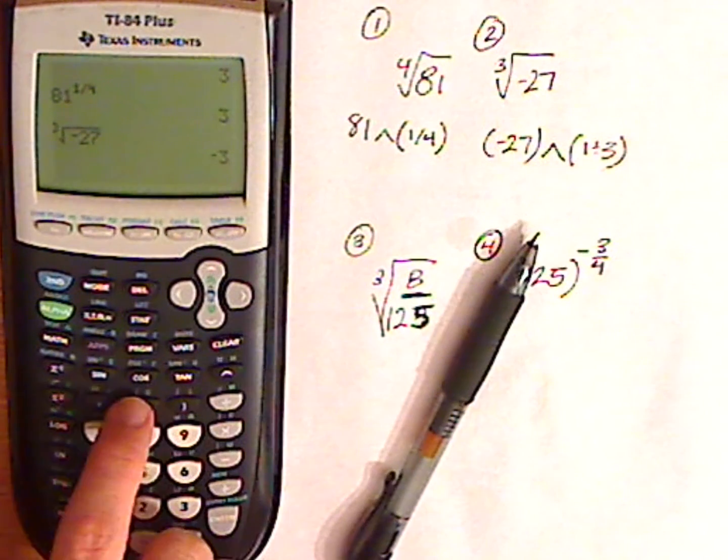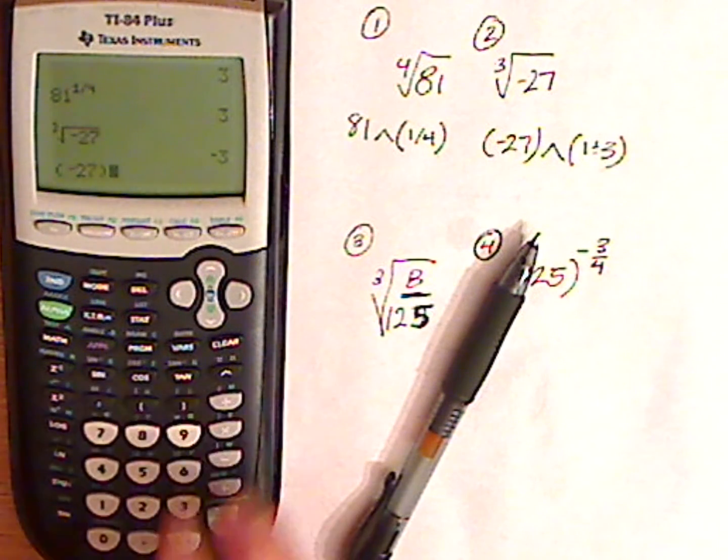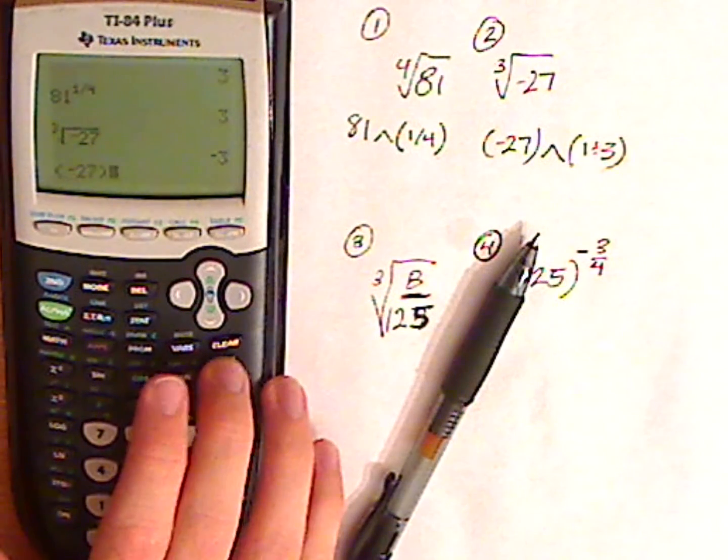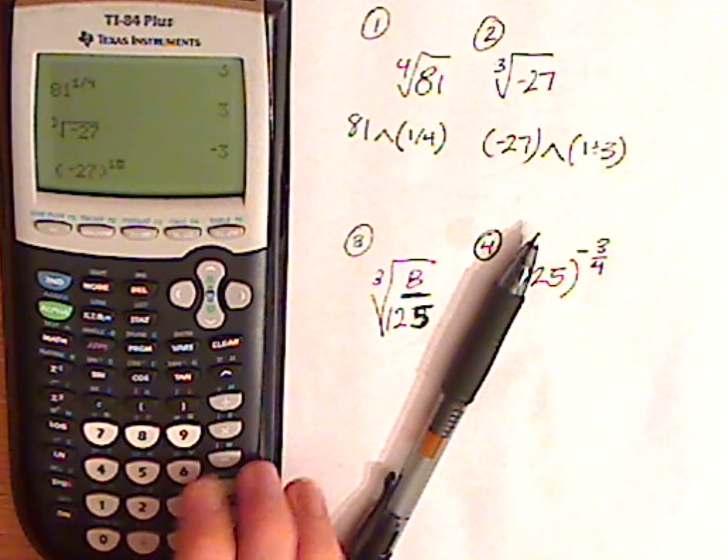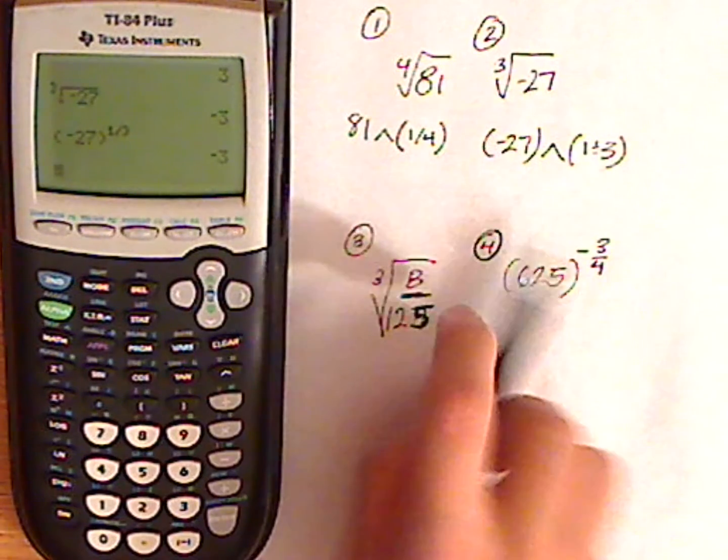So when you type it in, type in negative 27 with parentheses if you want, raised to the one third. So 1 divided by 3. And it gets negative 3.